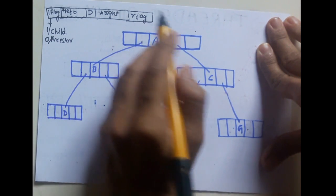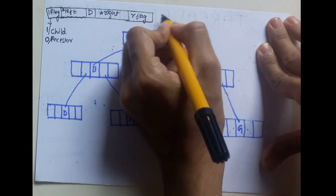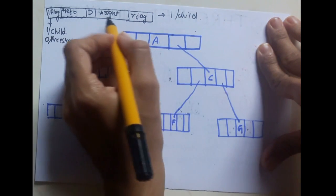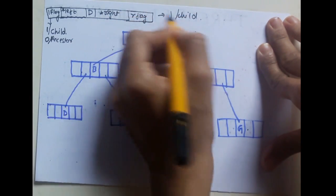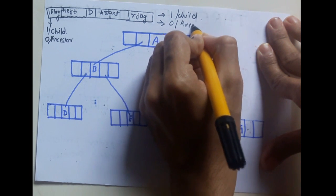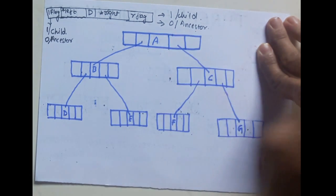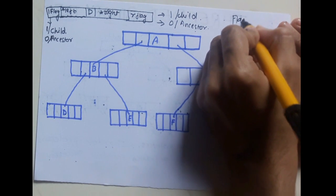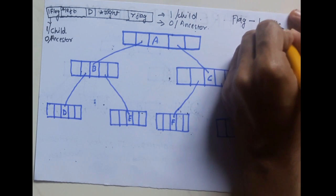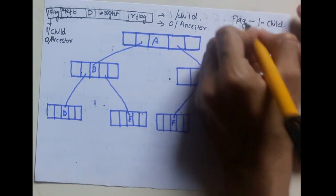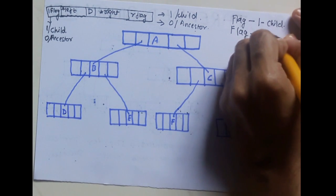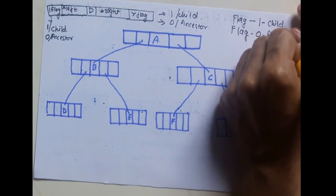Similarly for the right flag: if the right pointer is holding the address of a child node, the value of the flag will be 1. If it is holding the address of a parent or ancestor, then the value of the flag will be 0. In short, if flag is 1, the node is pointing to a child node; if the flag is 0, the node is pointing to an ancestor node.